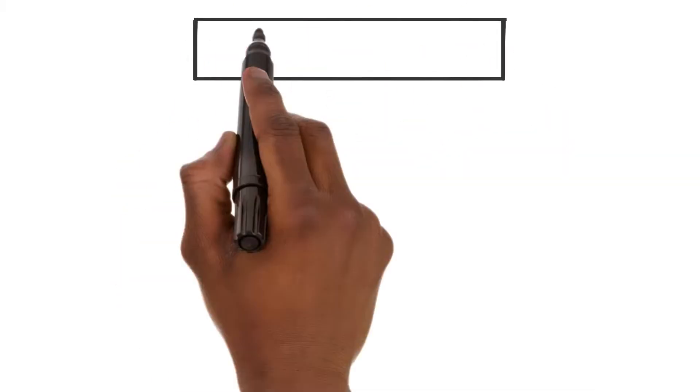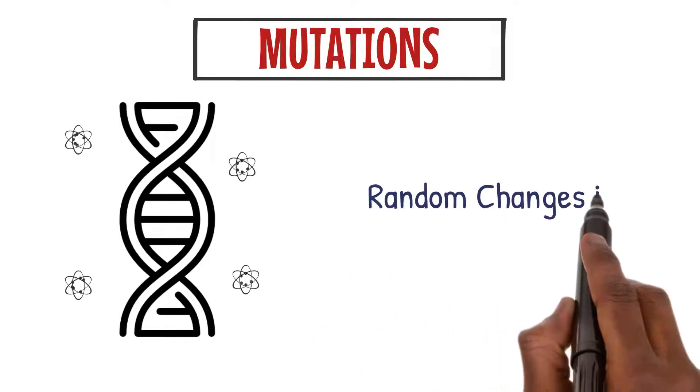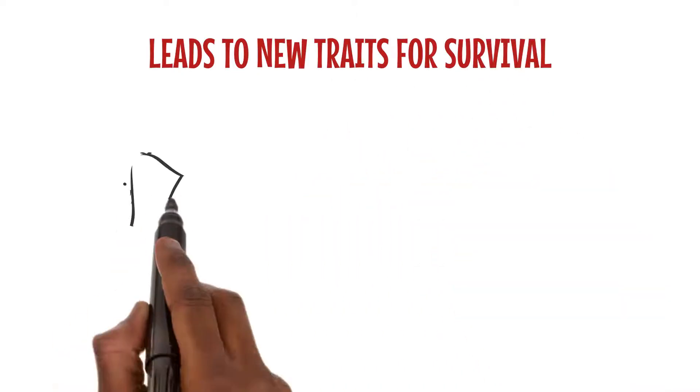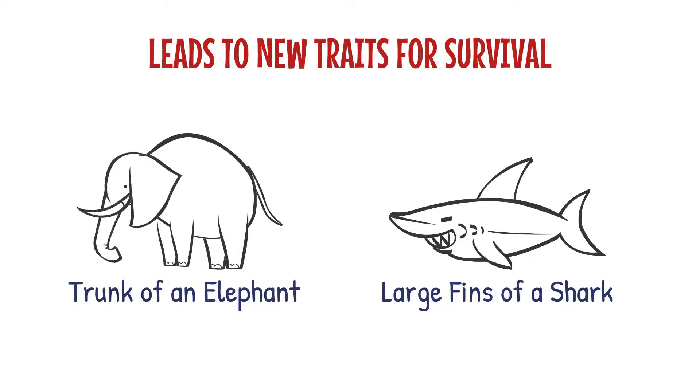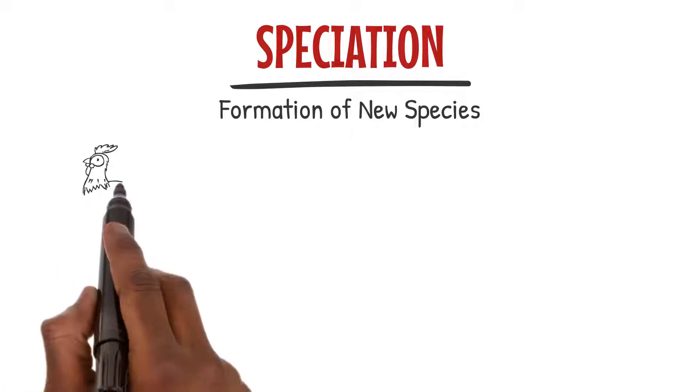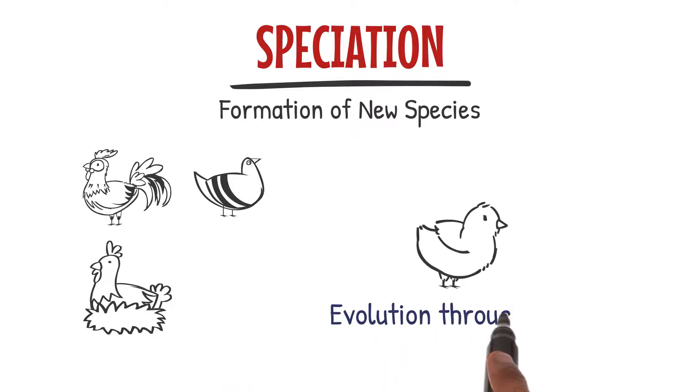What drives evolution? Mutations. Mutations are random changes in the DNA of organisms. Sometimes these changes can lead to new traits which can be advantageous for survival. Now let's move on to the formation of new species, also known as speciation. Speciation occurs when populations of the same species become isolated and start evolving separately.